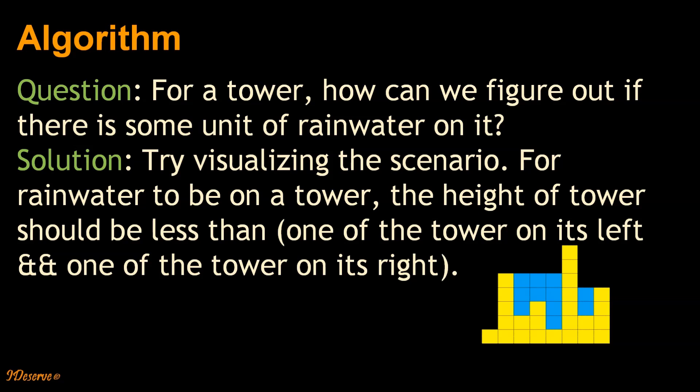For rain water to be on a tower, the height of tower should be less than one of the towers on its left and one of the towers on its right. So what does this mean?